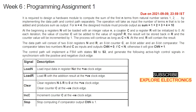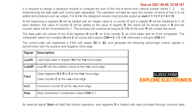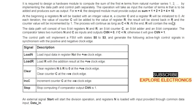A counter C and register R will be initialized to 0. At each iteration, the value of counter C is added to register R, and the result is stored back in R, so R holds the running sum. The counter is then incremented by 1. This process continues as long as C is less than N. With N equal to 4, it takes 4 iterations, and at the end R contains the total sum when C equals 4.